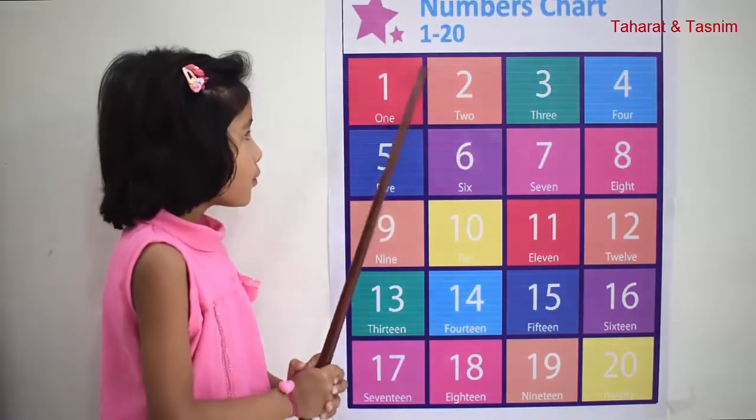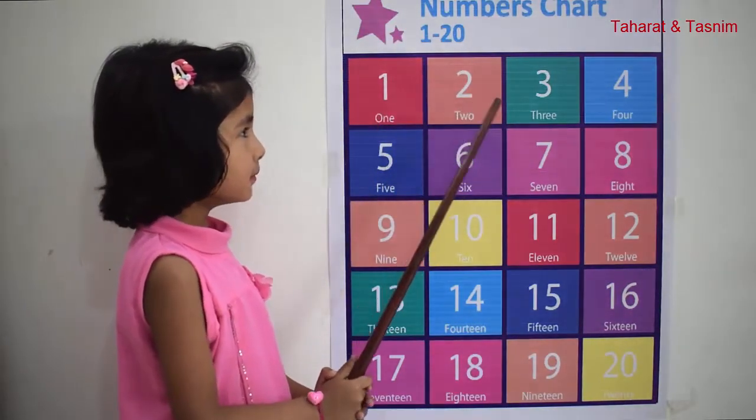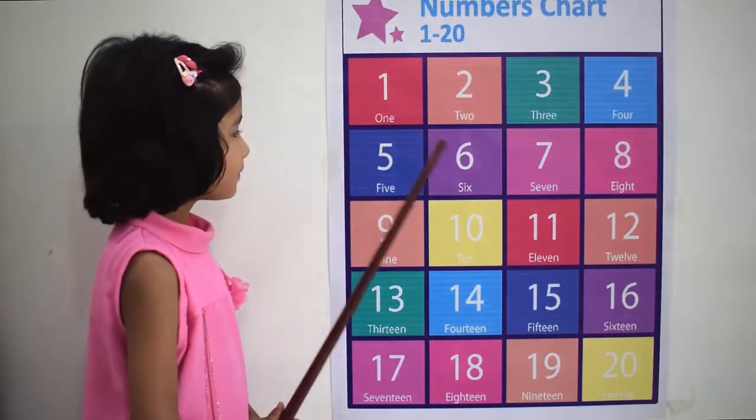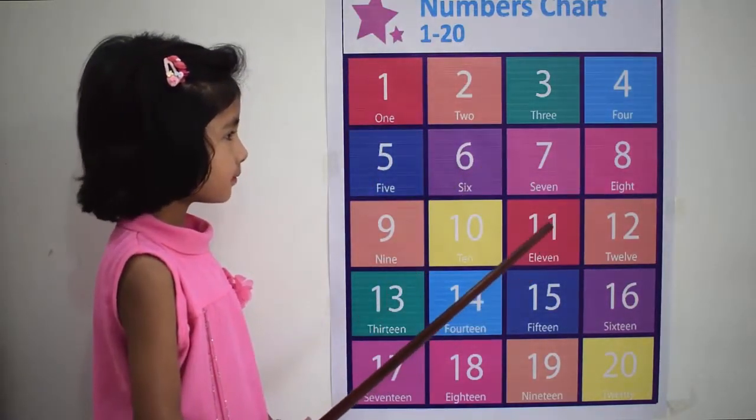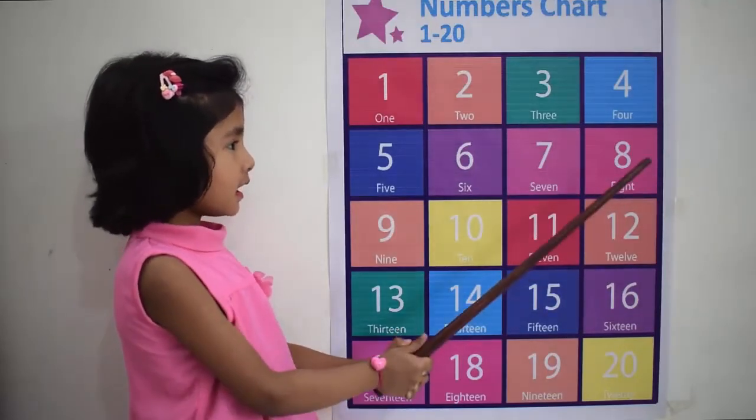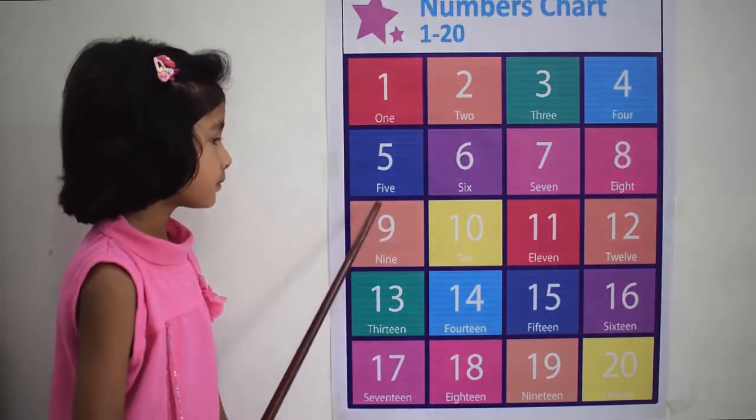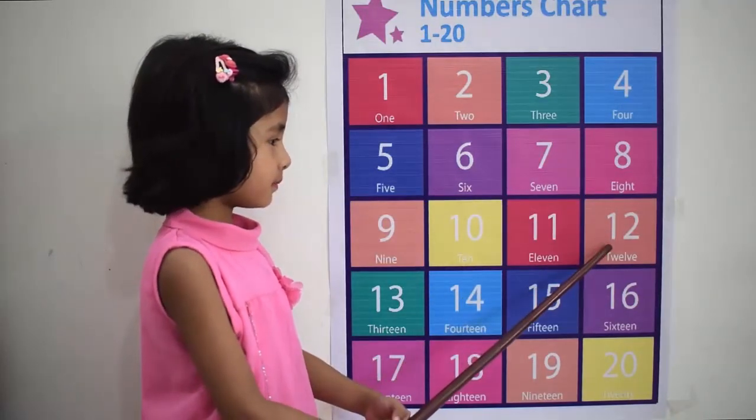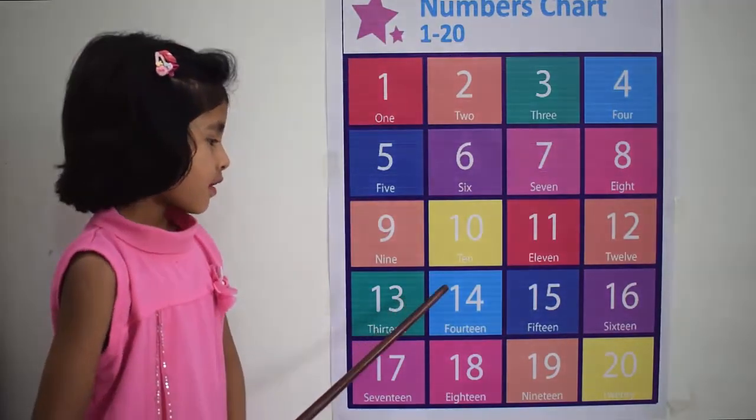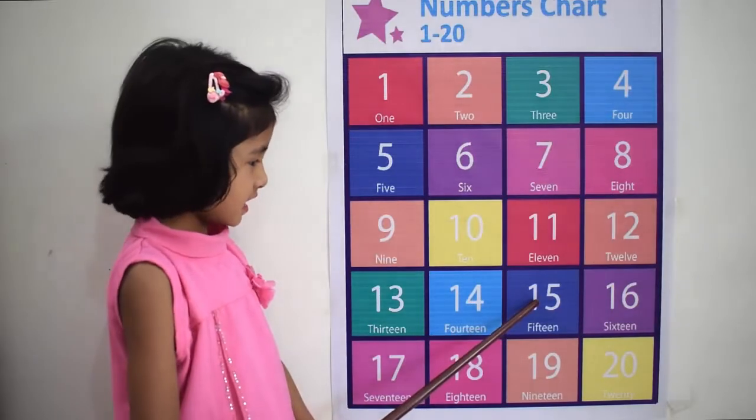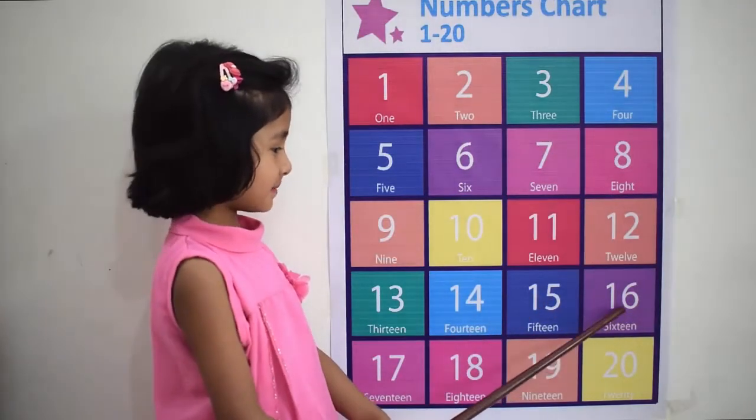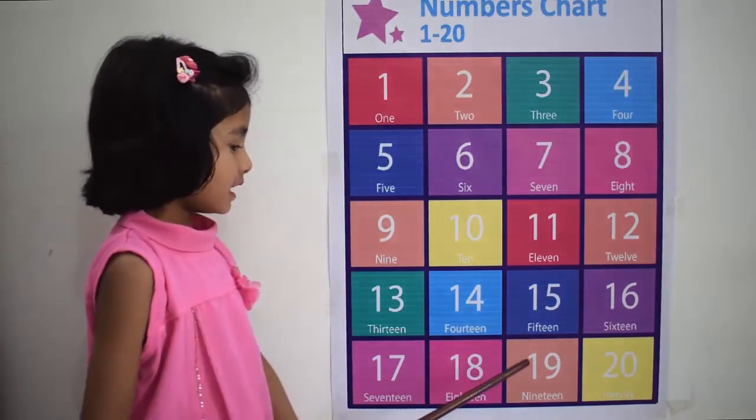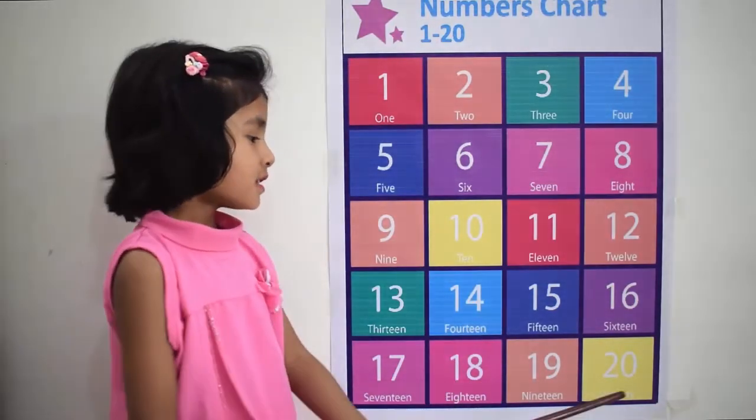One, two, three, five, six, seven, eight, nine, ten, eleven, twelve, thirteen, fourteen, fifteen, sixteen, seventeen, eighteen, nineteen, twenty.